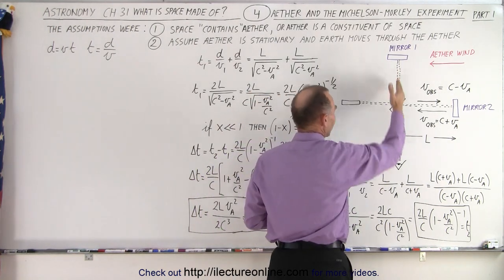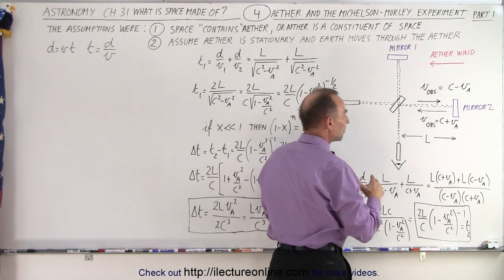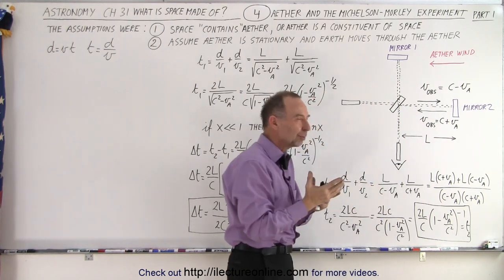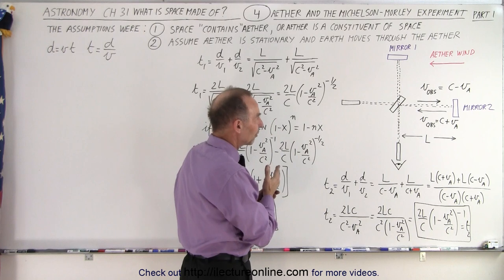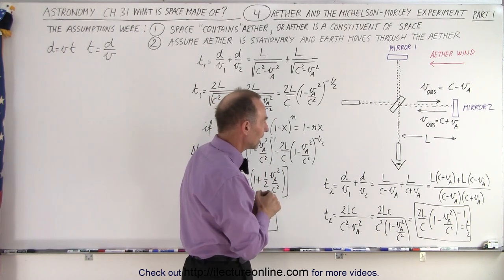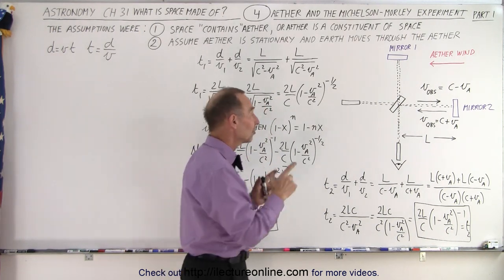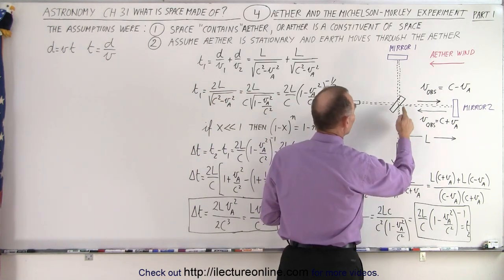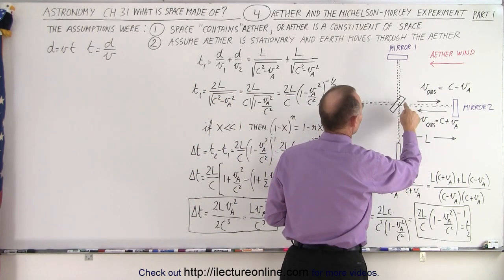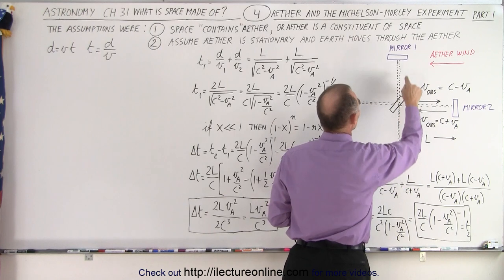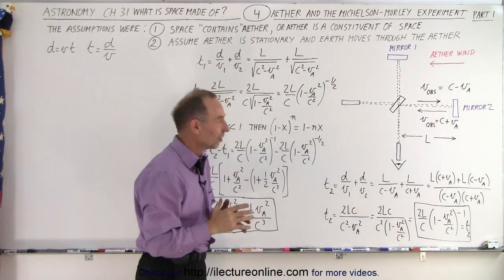In the perpendicular direction, as we saw before, the speed will be related to the Pythagorean theorem. It will be the square root of the velocity of light squared minus the velocity of the ether squared. So let's calculate the time it would take to go from here to there and back on each path, and get the difference in time.